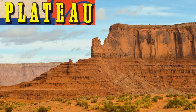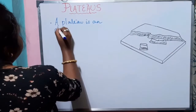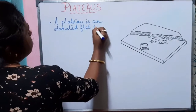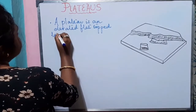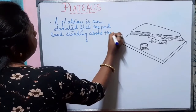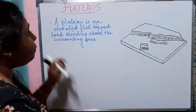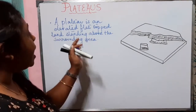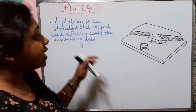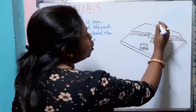Today we will have a detailed discussion on plateaus, which is another major landform of the earth. So let's get started. What are plateaus? A plateau is an elevated flat-topped land standing above the surrounding area. While we are calling plateau a flat-topped land, here we have a diagram of a plateau and we can see that the top of the plateau is exactly flat.